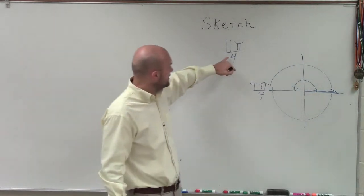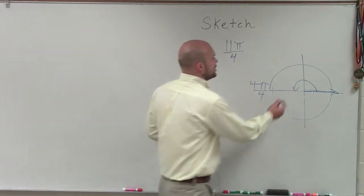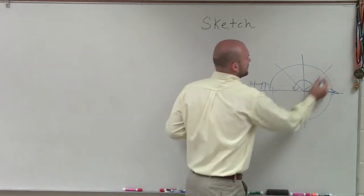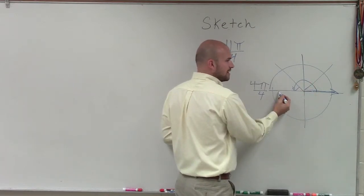But I like to take the denominator of the angle that I'm going to sketch and rewrite it as halfway around. So then I know that I'm breaking up half of my circle into fourths: 1 fourth, 2 fourths, 3 fourths, 4 fourths.